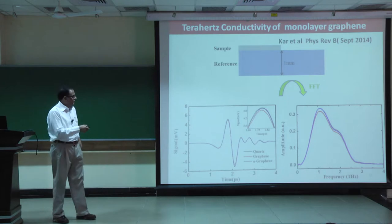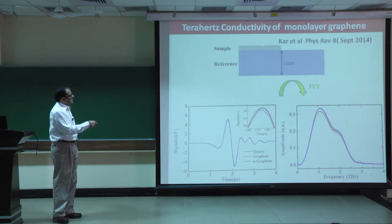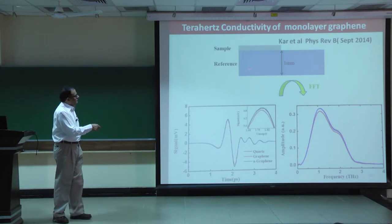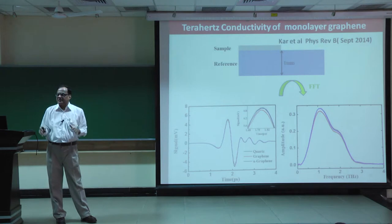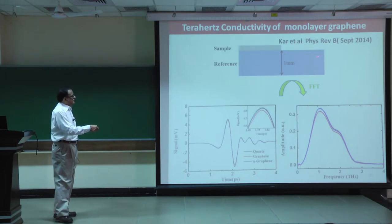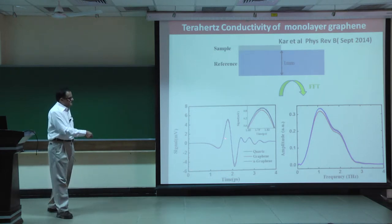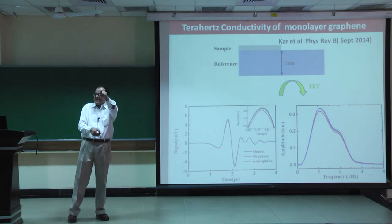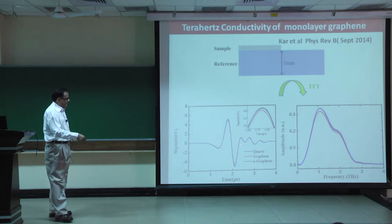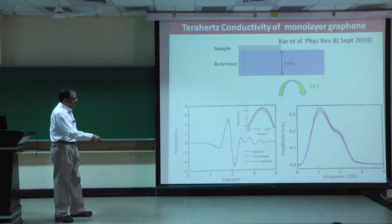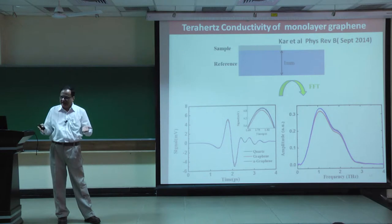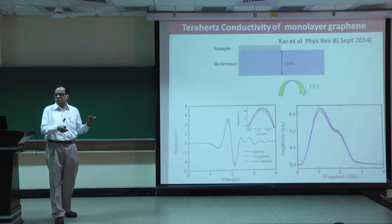To detect the THz we use electro-optic sampling. We take a part of the visible laser, put it through a quarter-wave plate, split it into two polarizations that are balanced when nothing is happening. When the THz electric field arrives it disturbs the balance between these polarizations and we measure the THz electric field directly. This way we get the electric field of the THz in the lab — both amplitude and phase — without needing a Kramers-Kronig transform, since this is coherent radiation. The experiments are done with single-layer graphene grown by CVD on alpha-quartz, measured with and without graphene.